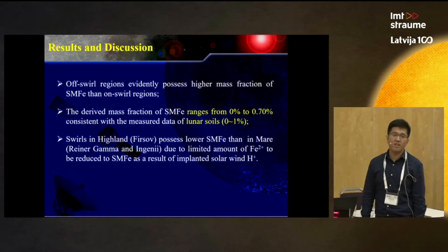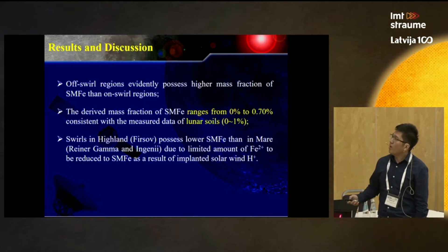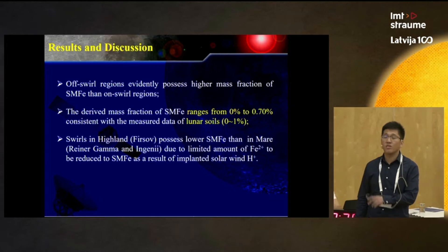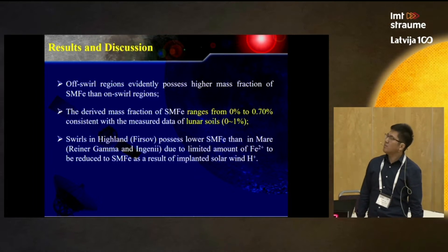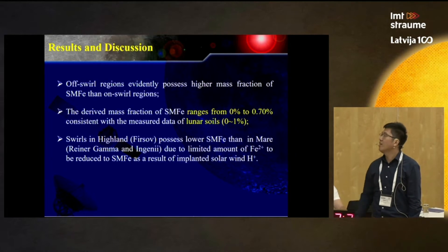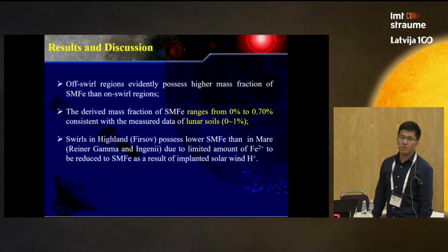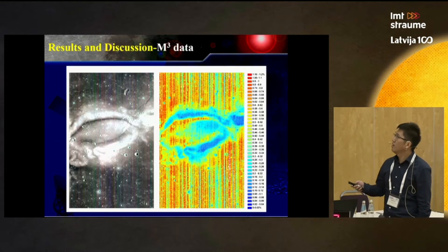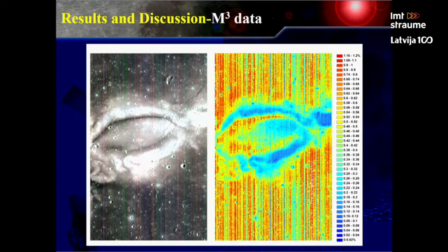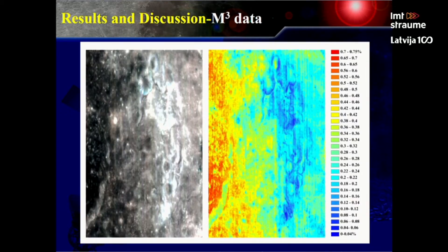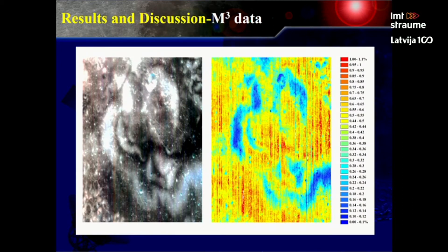We found that swirls in highland regions, such as Ferso, have lower sub-microscopic iron than swirls in Mare regions such as Reiner Gamma and Ingenii. This may be due to the limited amount of ferrous iron available to be reduced to sub-microscopic iron by implanted solar wind hydrogen. We also conducted the same analysis on the M3 data, and similarly found that on-swirl regions have a lower abundance of sub-microscopic iron than off-swirl regions, with the swirl shapes clearly depicted.